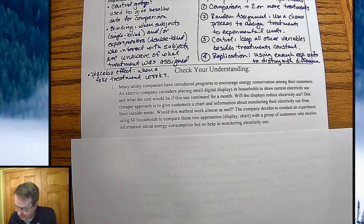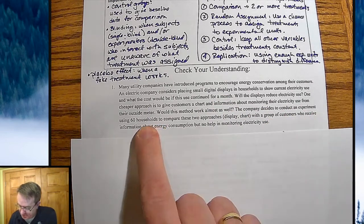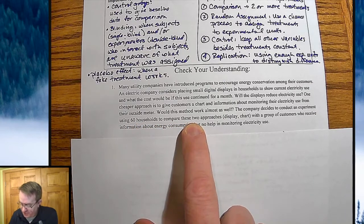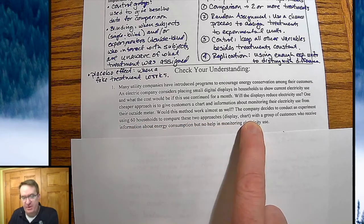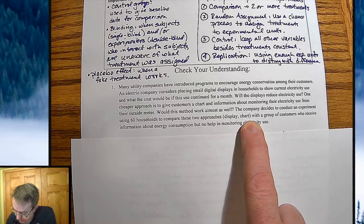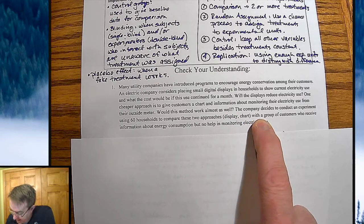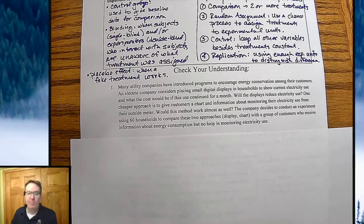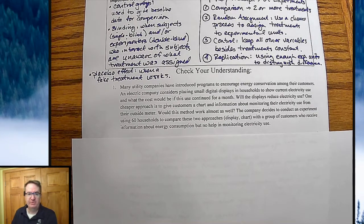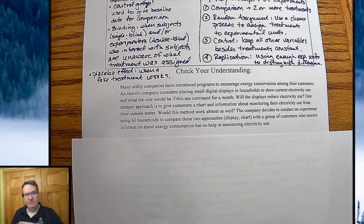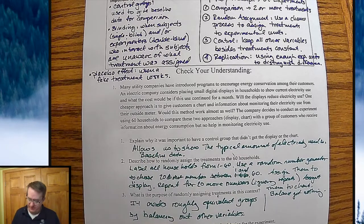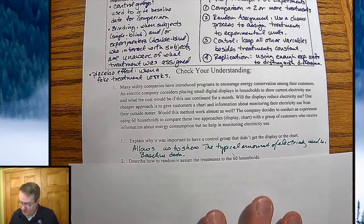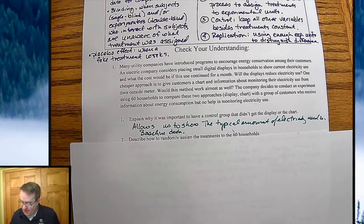So the company decides to conduct an experiment using 60 households to compare the two approaches. Do we do a display or do we have a chart? And with a group of customers who receive the information about the energy consumption but no help monitoring electricity, so it's just up to them. One, there's a display. The other people, they're charting. So explain why it's important to have a control group that didn't get a display or the chart.